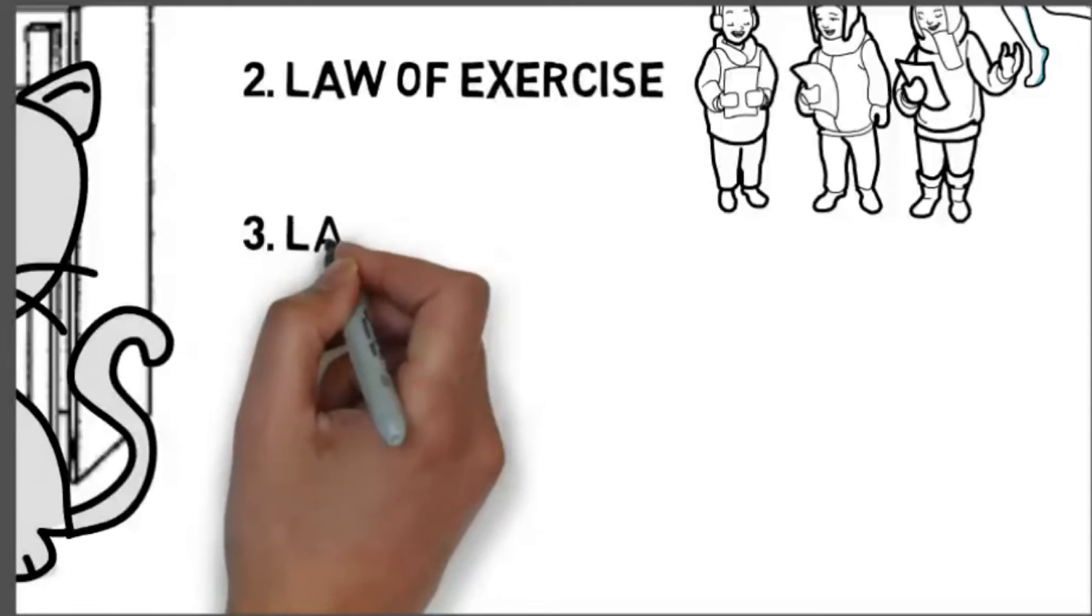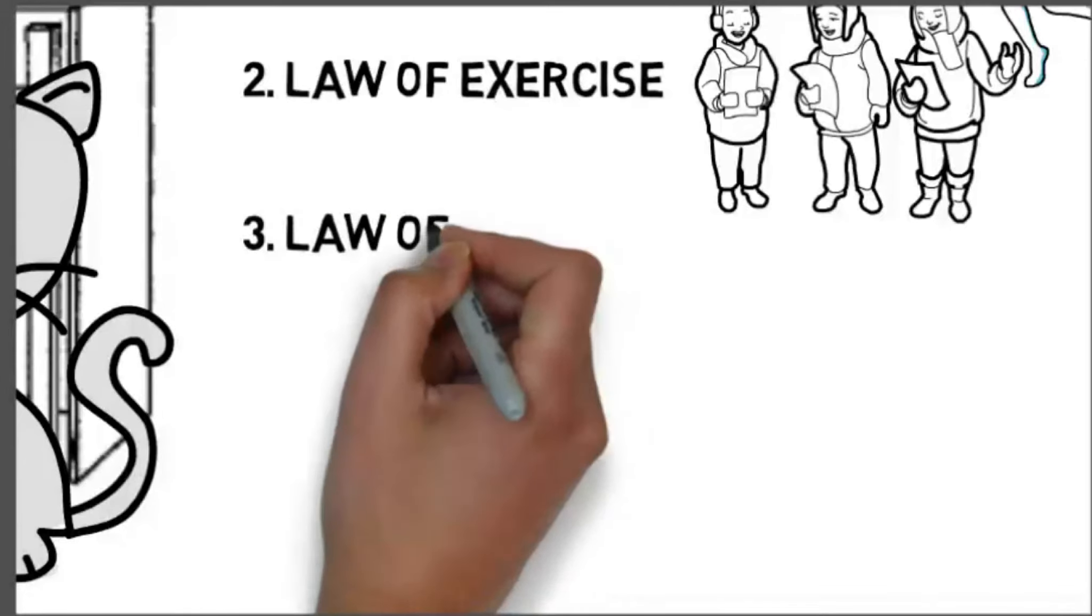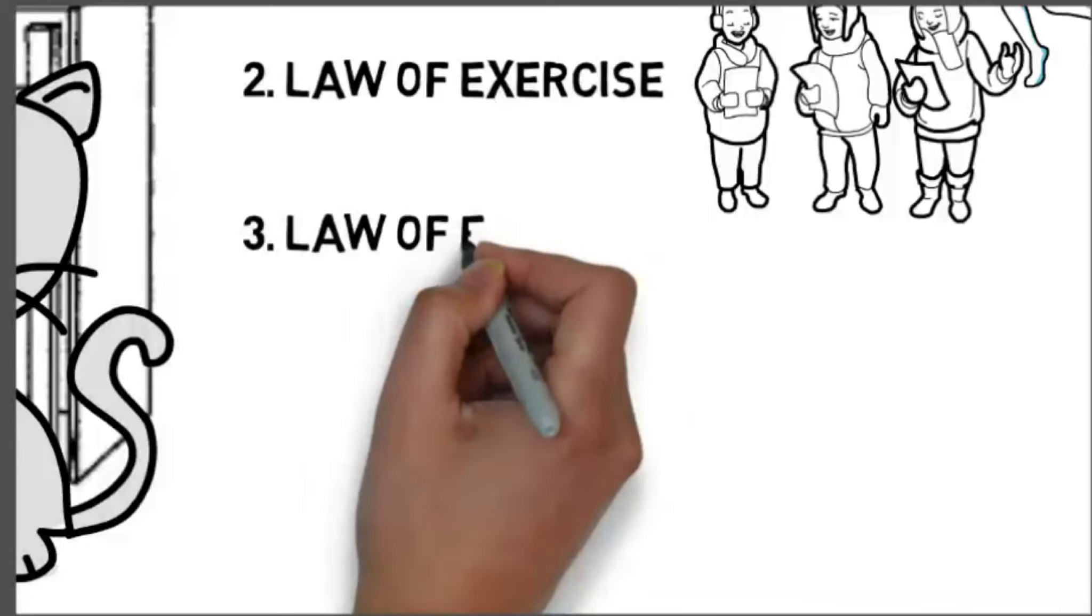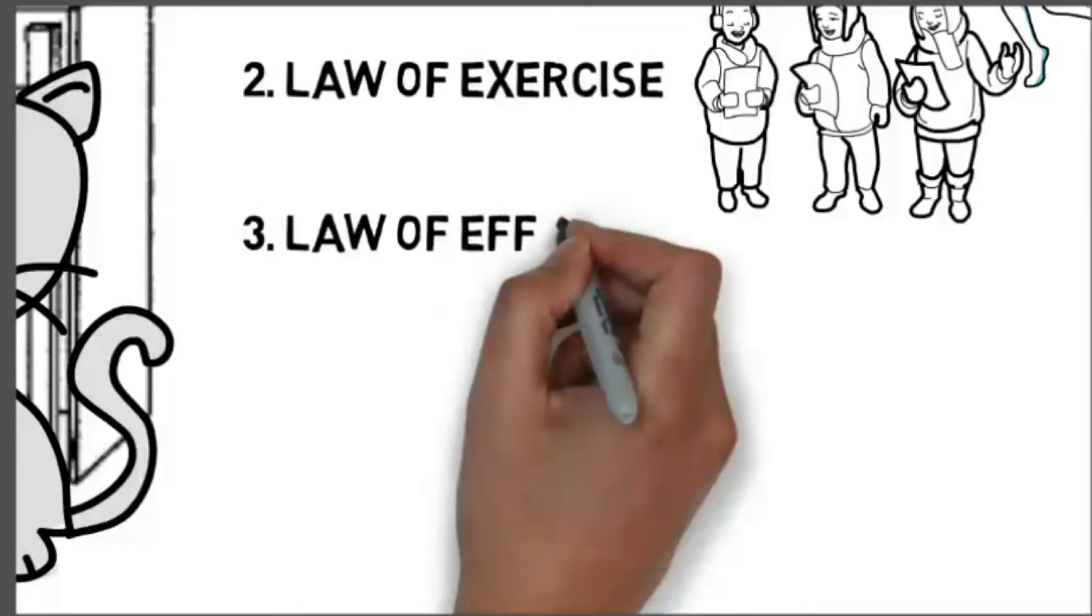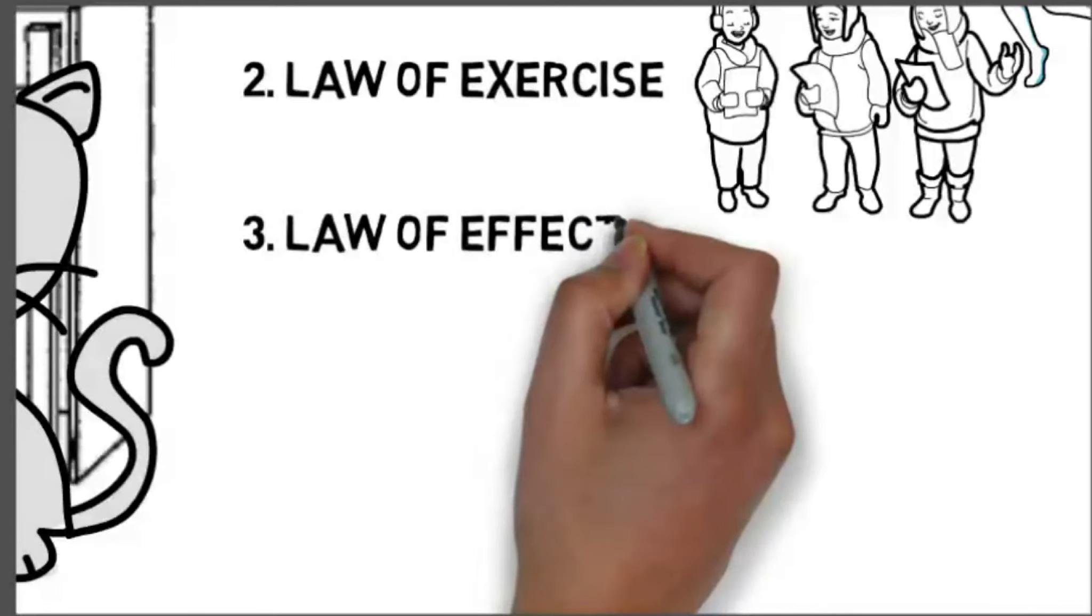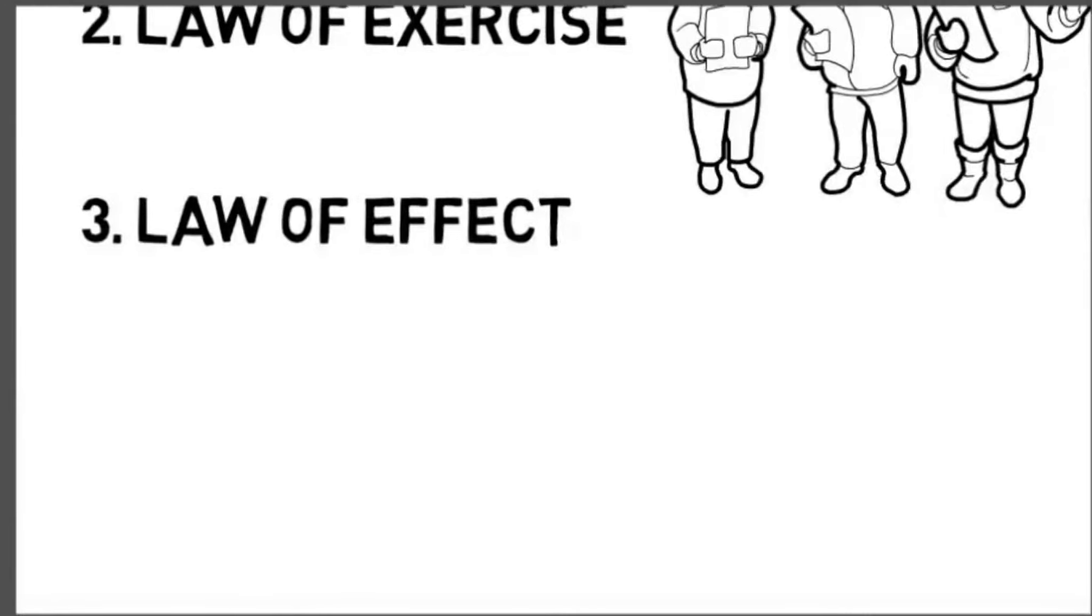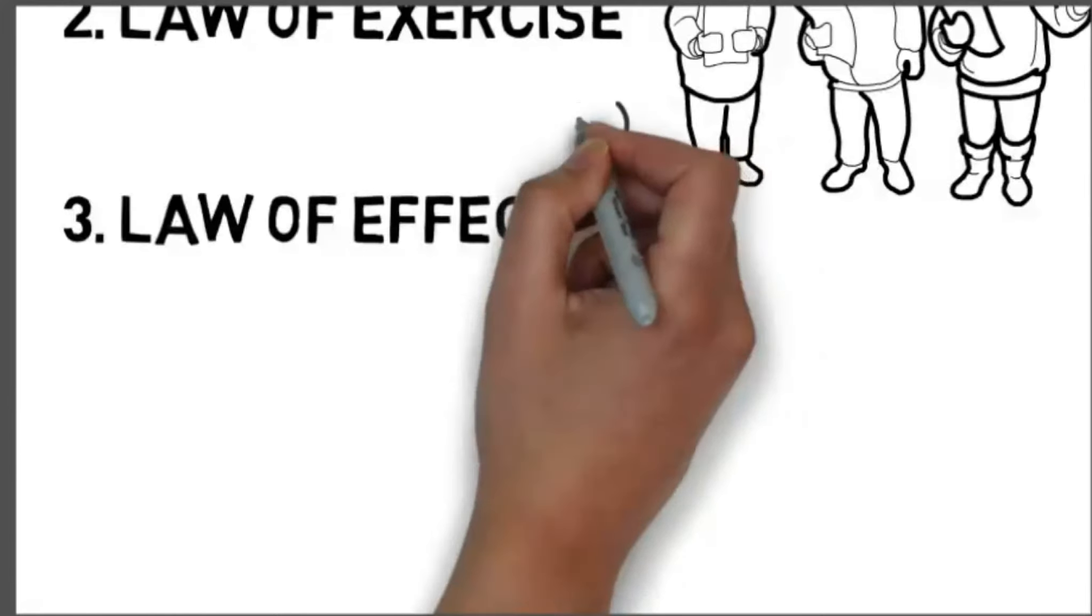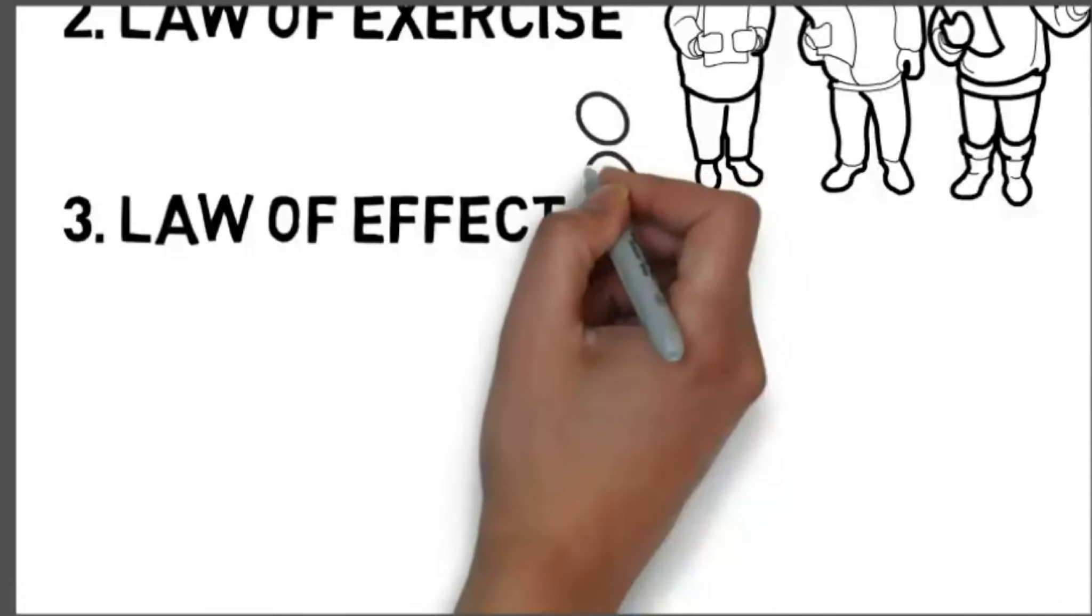Then there is the law of effect. This is an important law of Thorndike's, which states that when a connection between stimulus and response is accompanied by a satisfying state, its strength is increased. On the other hand, when a connection is accompanied by an annoying state of affairs, its strength is reduced, or weakened. The saying 'nothing succeeds like success' goes very well with this law. In other words, the responses that produce satisfaction, or comfort, for the learner, are strengthened.